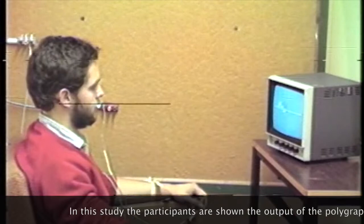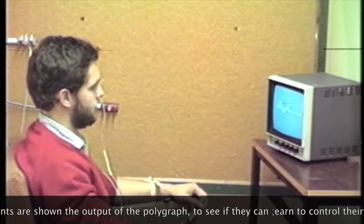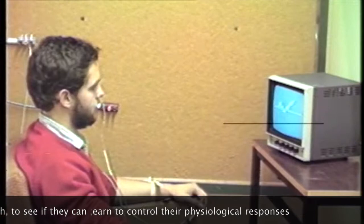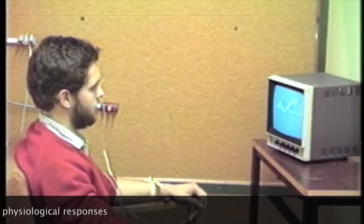To display the physiological signal to the subject it's necessary to use some form of feedback. This can take many forms but a very simple and effective method is simply to take the signal from the polygraph and via a computer show that signal on a TV screen to the subject.